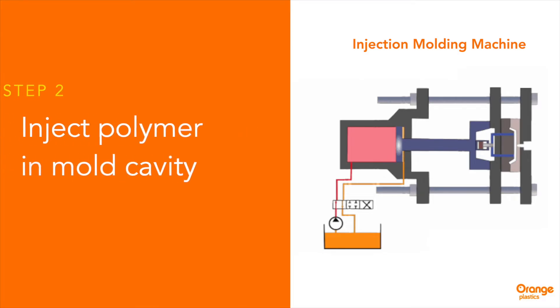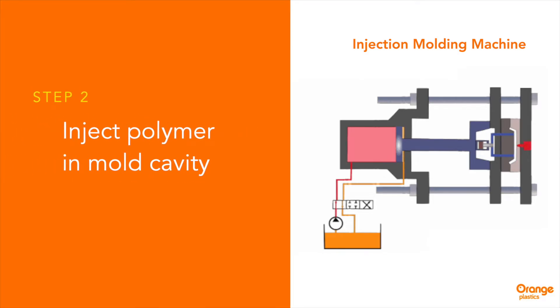Then, the liquid polymer is injected into the mold cavity. Once the cavity is filled, a holding pressure is maintained. This is essential to compensate for material shrinkage.